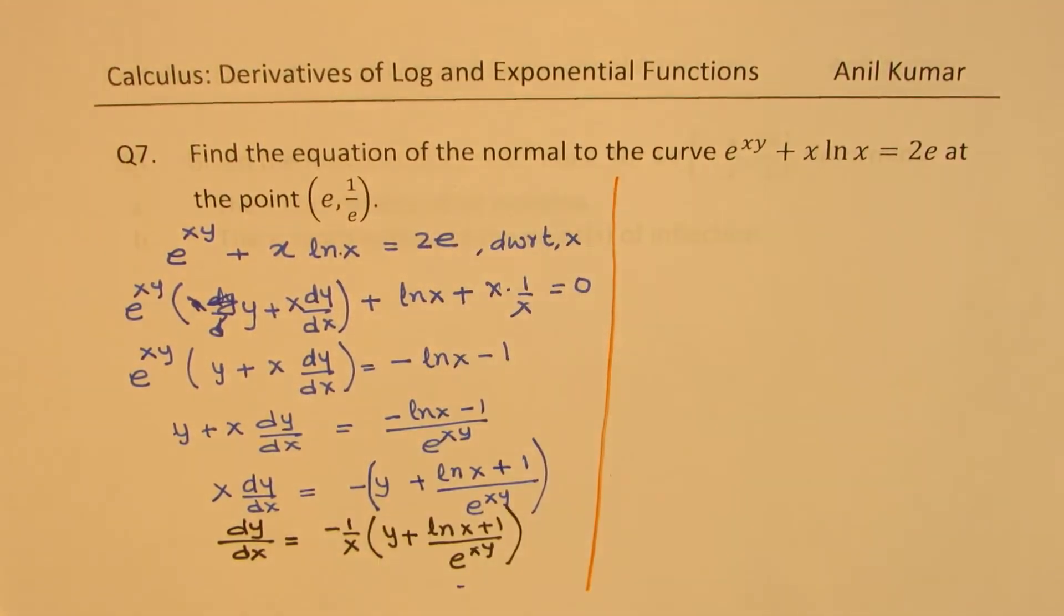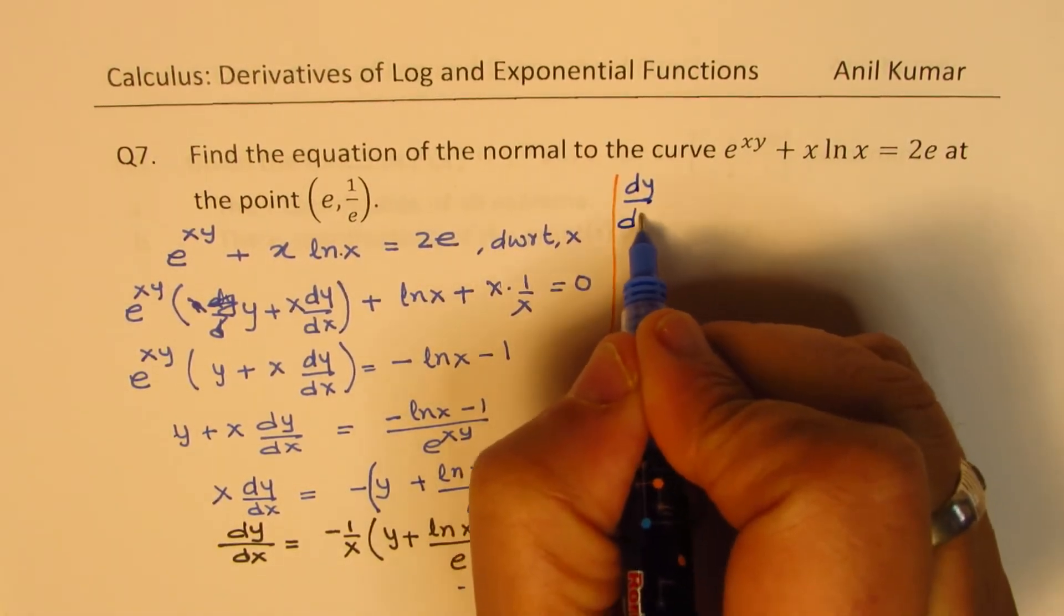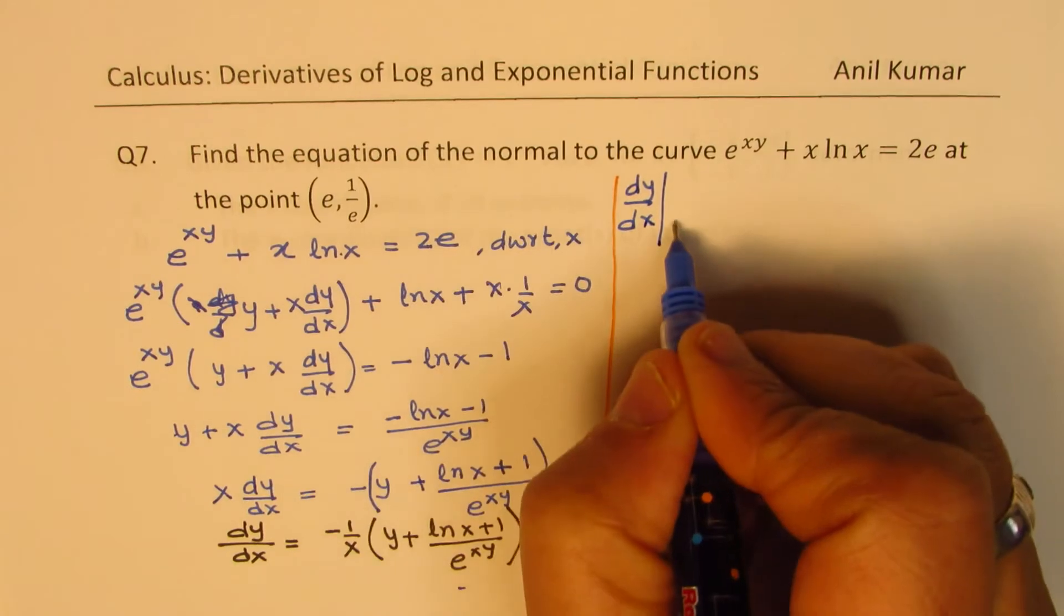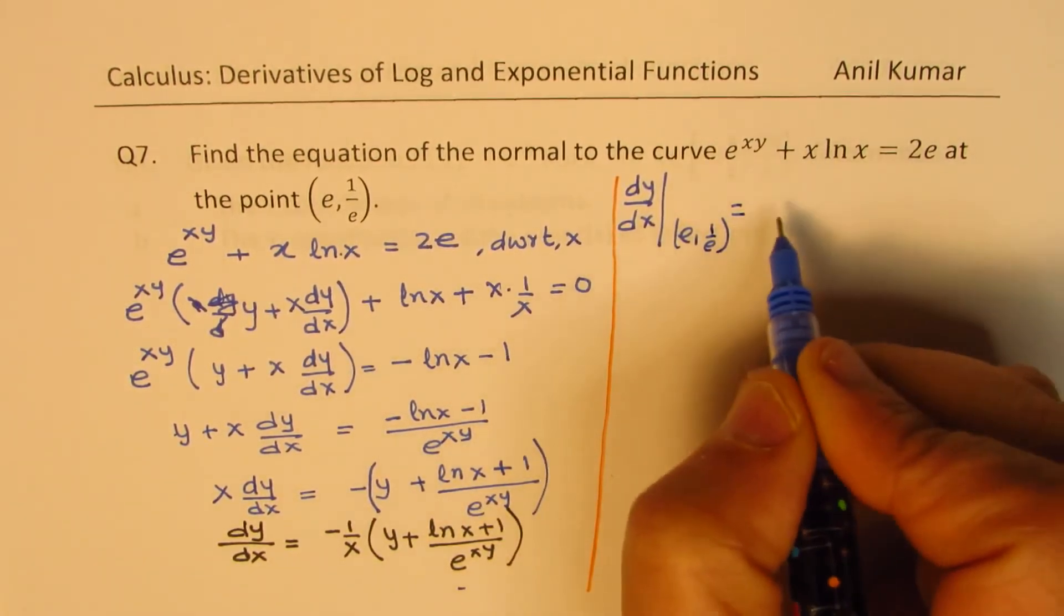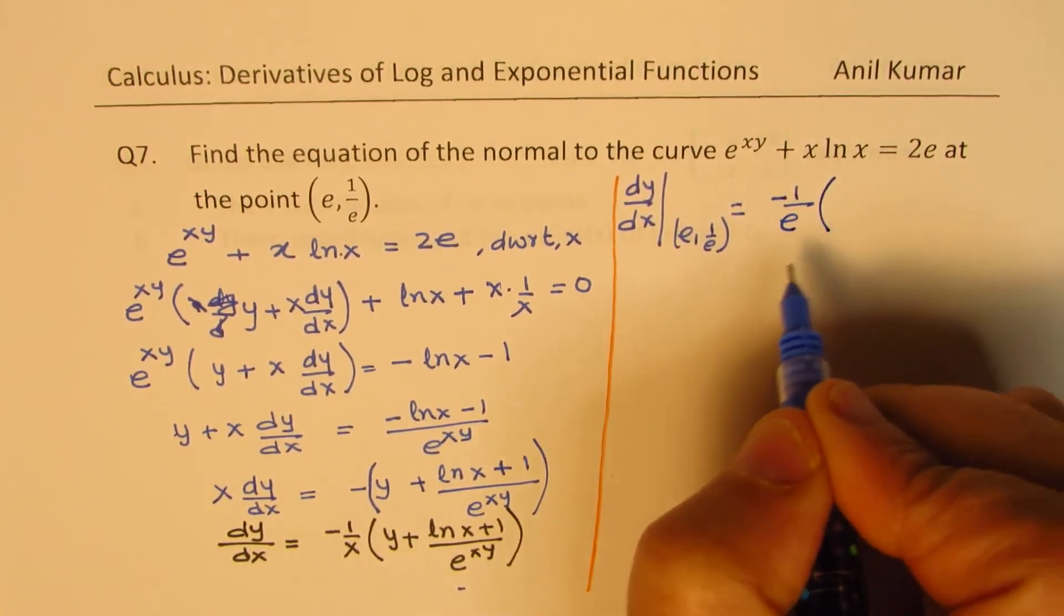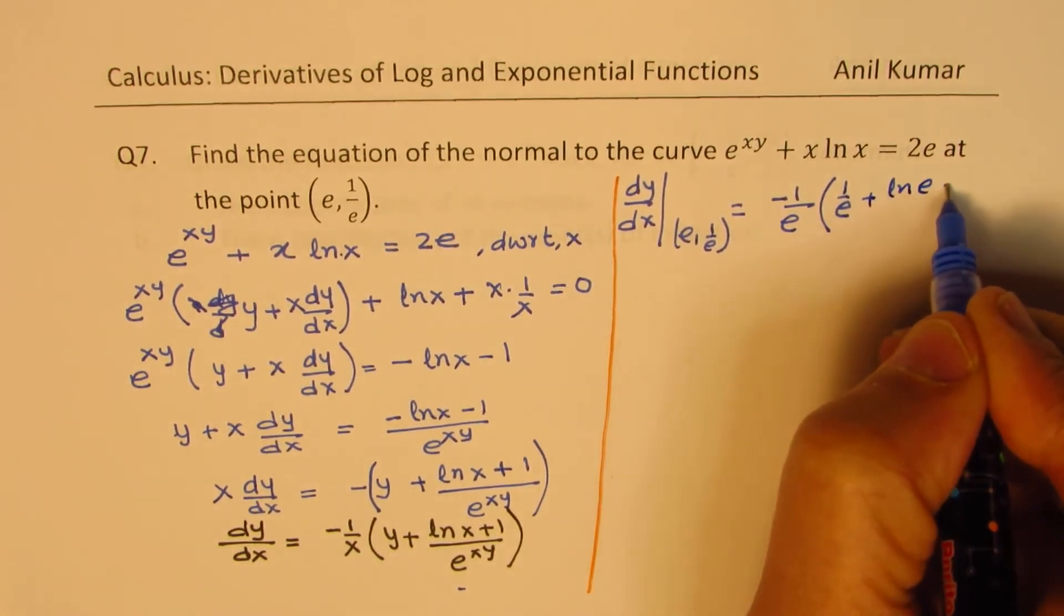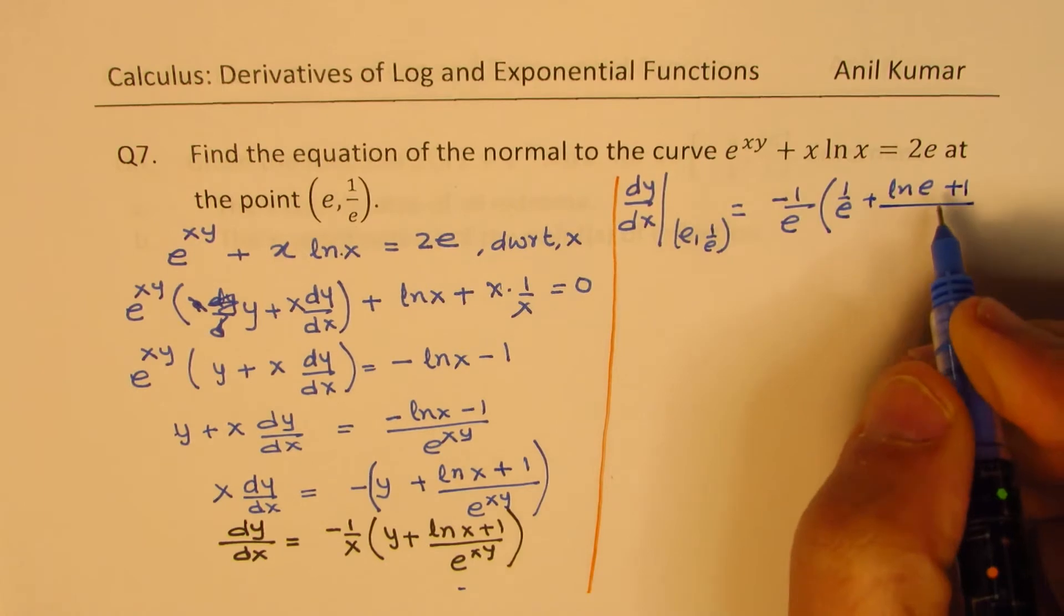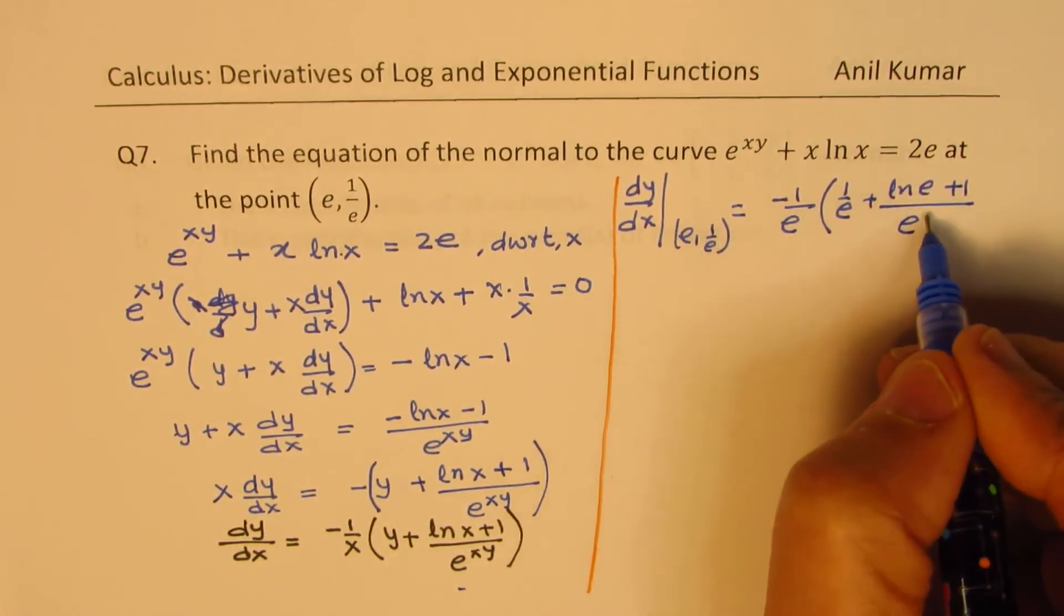We need to find the equation of the normal. So let's first find the derivative's slope. We have dy/dx at the point (e, 1/e). Let's substitute. We get -1/e times (1/e + ln(e) + 1) / e^(1). The product xy is 1.